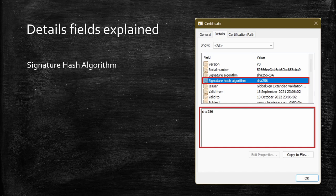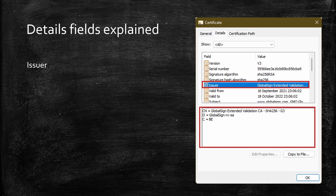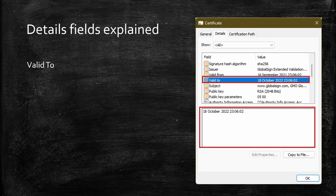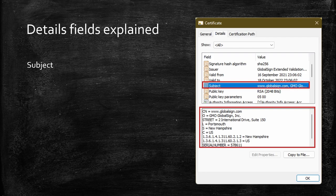Issuer is the name of the CA that signed a certificate request and issued the signed certificate. In this screenshot, we see GlobalSign Extended Validation CA SHA-256 G3 as the common name for the issuing CA who issued the certificate. Valid from shows the starting date of a certificate — the date a certificate will be valid from. Valid to is simply the date when a certificate would expire. Subject field shows distinguished information about the subject the certificate was issued to. Information contained in this field includes common name, organization, organizational unit, country, location, state, email address, and a few more.